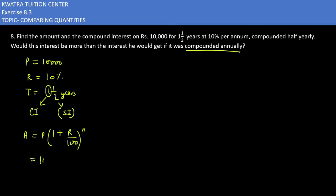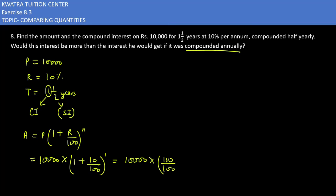Applying the formula: Principal is 10,000, rate is 10 divided by 100, and n is 1. So it is 10,000 × (110/100). Cancelling two zeros with two zeros gives 100 × 110, which equals rupees 11,000.